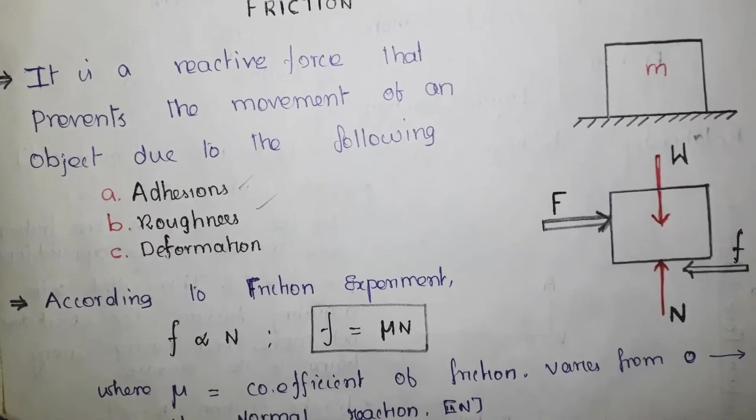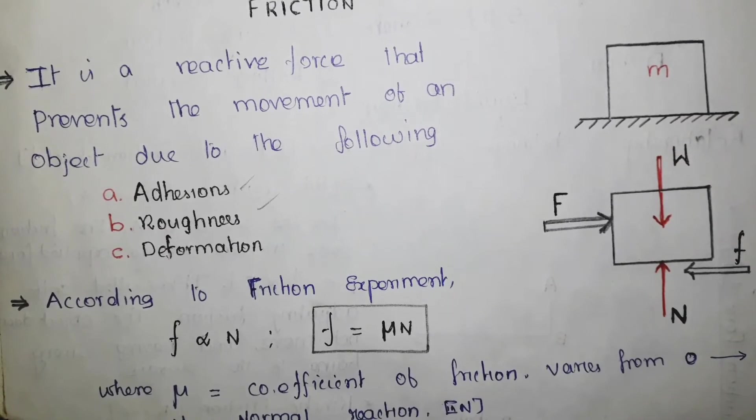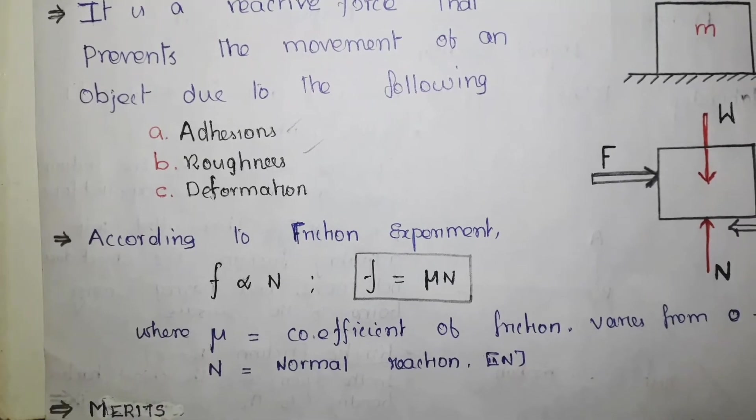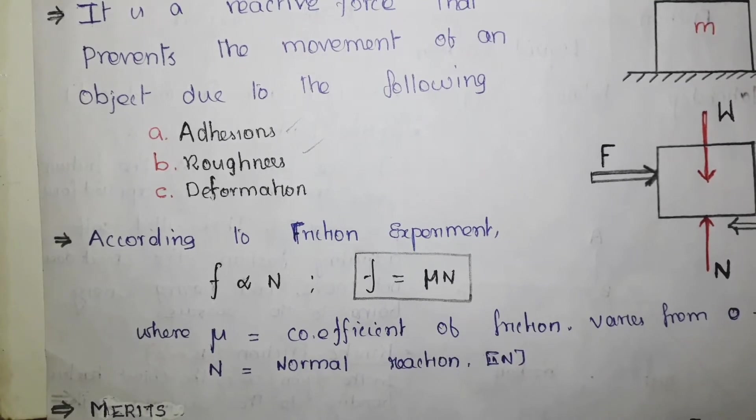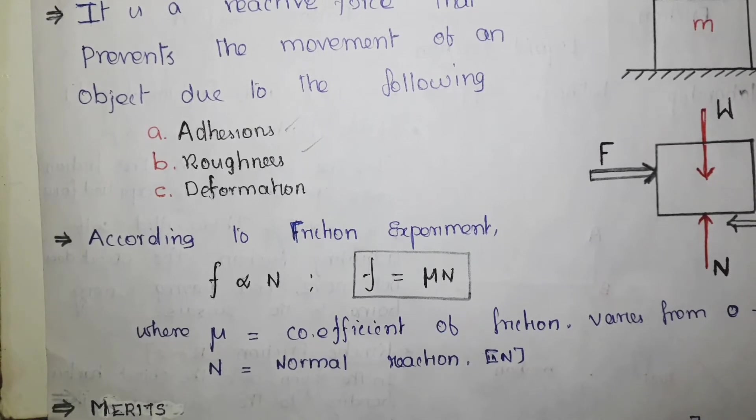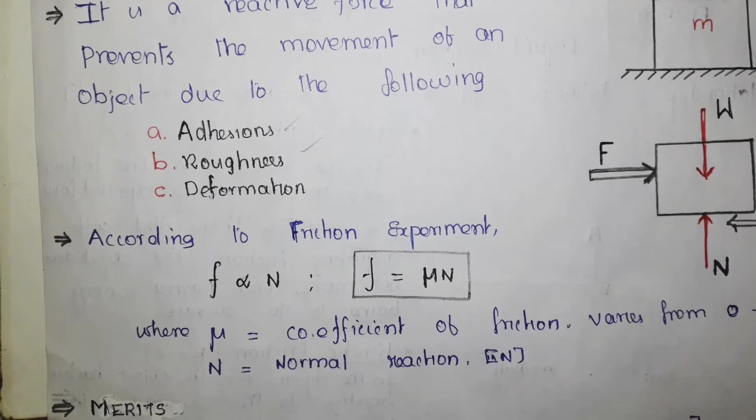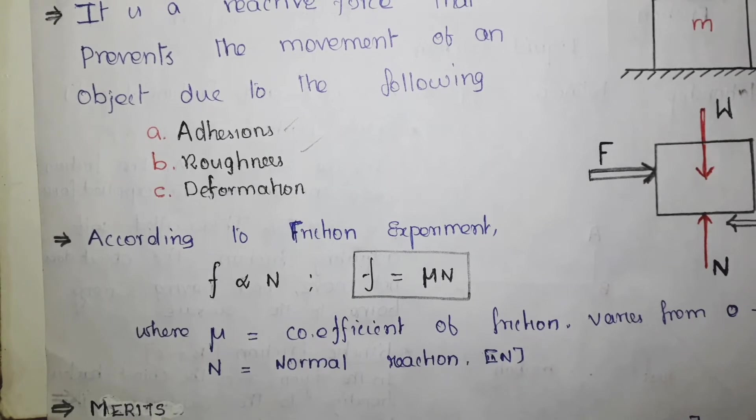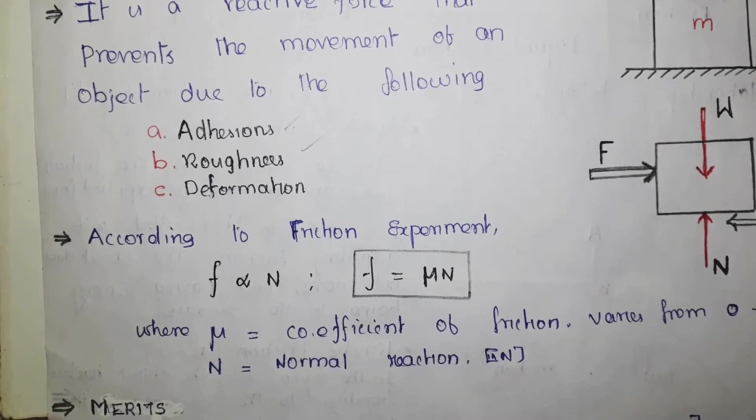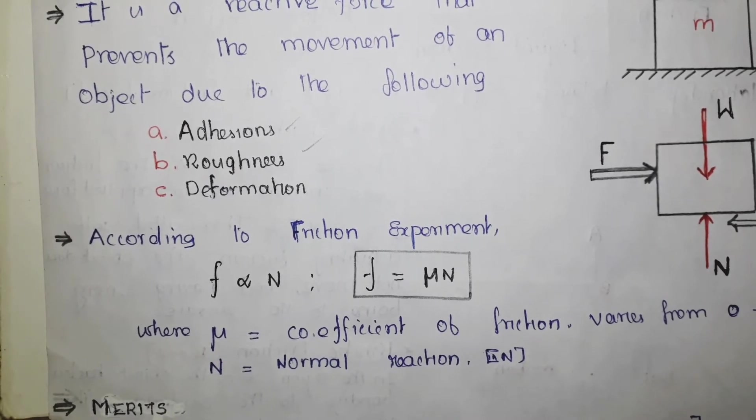First one is adhesion. Adhesion means whenever two different materials are in contact, the molecules of two different materials are attracting each other. Therefore, it develops an electromagnetic force that prevents the movement of one object with respect to another one.